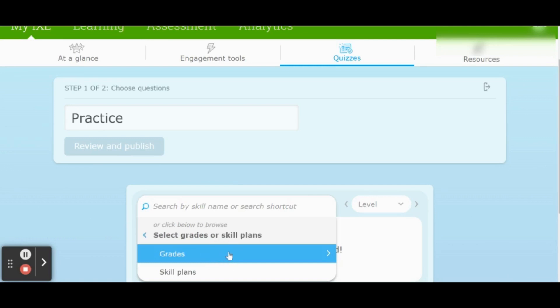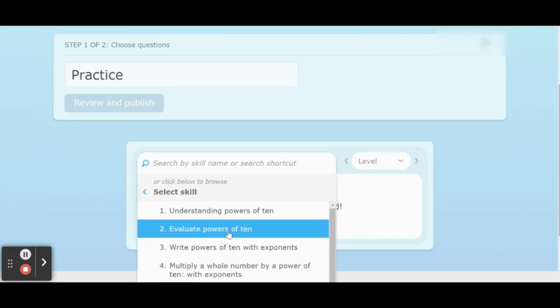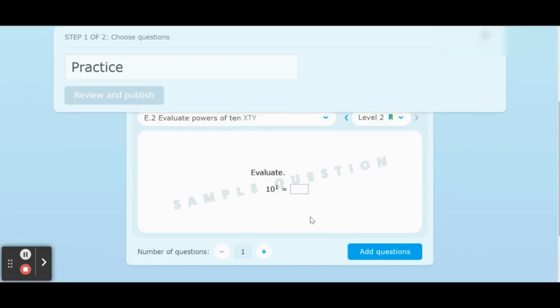Start by subject, then grade level, and then select a category. After that, you'll start seeing your skills and standards and sample questions.